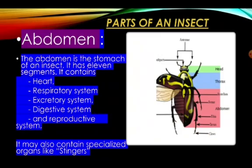Parts of an insect — abdomen. The abdomen is the stomach of an insect. It has 11 segments. It contains the heart, the respiratory system, the excretory system, the digestive system, and the reproductive system. It may also contain specialized organs like stingers.